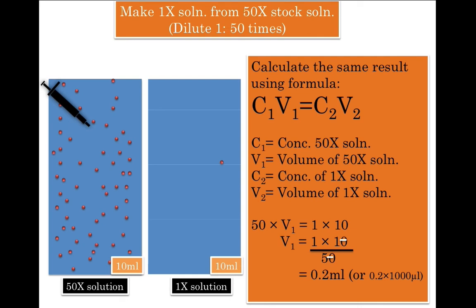In order to convert 0.2 ml into microliters, we will multiply 0.2 with 1000 microliters since 1 ml equals 1000 microliters. This will yield us 200 microliters. This is the exact same result what we deduced logically just minutes before.